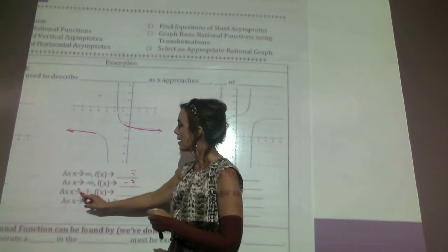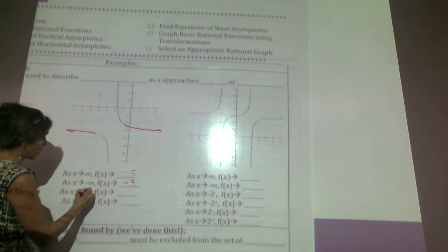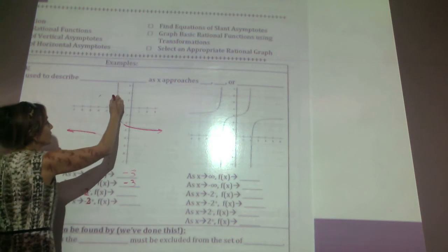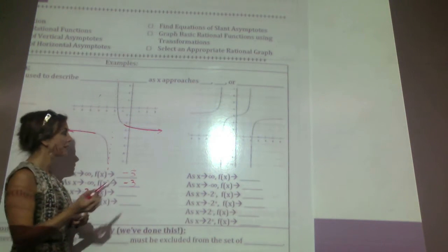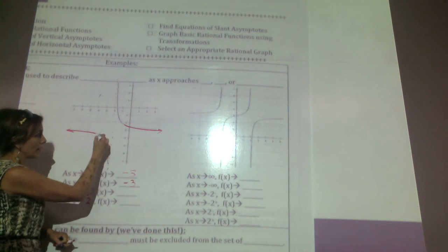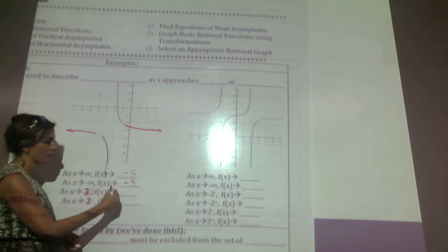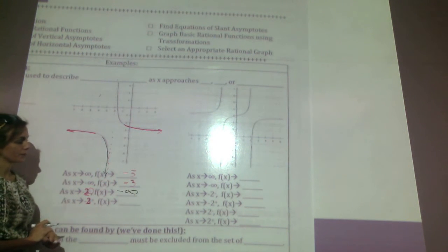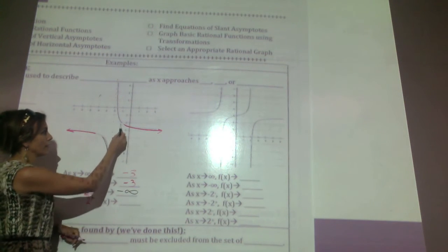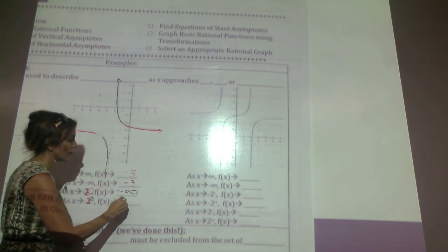Now let's look at x approaches negative 2 from the left. Coming to the left of that vertical line at x equals negative 2 and tracing the graph towards it, the graph is going infinitely down, or towards negative infinity. Now as x approaches negative 2 from the right — going to the right of negative 2, finding the graph, and tracing it towards negative 2 — the y value is going infinitely up, or towards positive infinity.